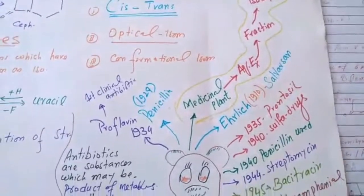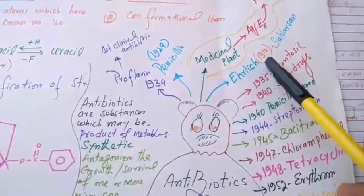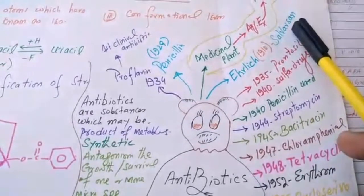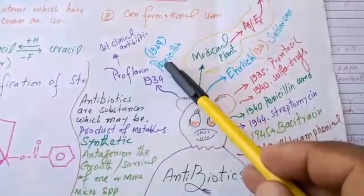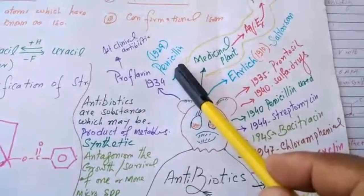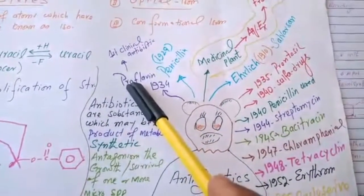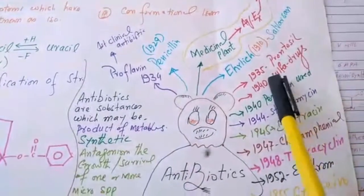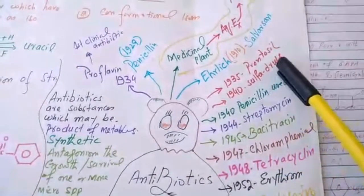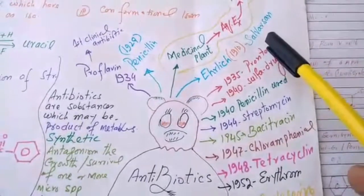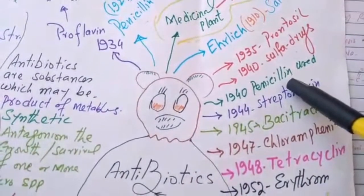In 1910, Ehrlich discovered the antibiotic salvarsan. In 1929, Alexander Fleming discovered penicillin. 1934, proflavin was discovered, and this was the first clinical antibiotic. Later on, in 1935, prontosil was discovered. 1940, sulfa drugs were discovered from prontosil because this prontosil was a pro-drug. 1940, penicillin was used clinically.